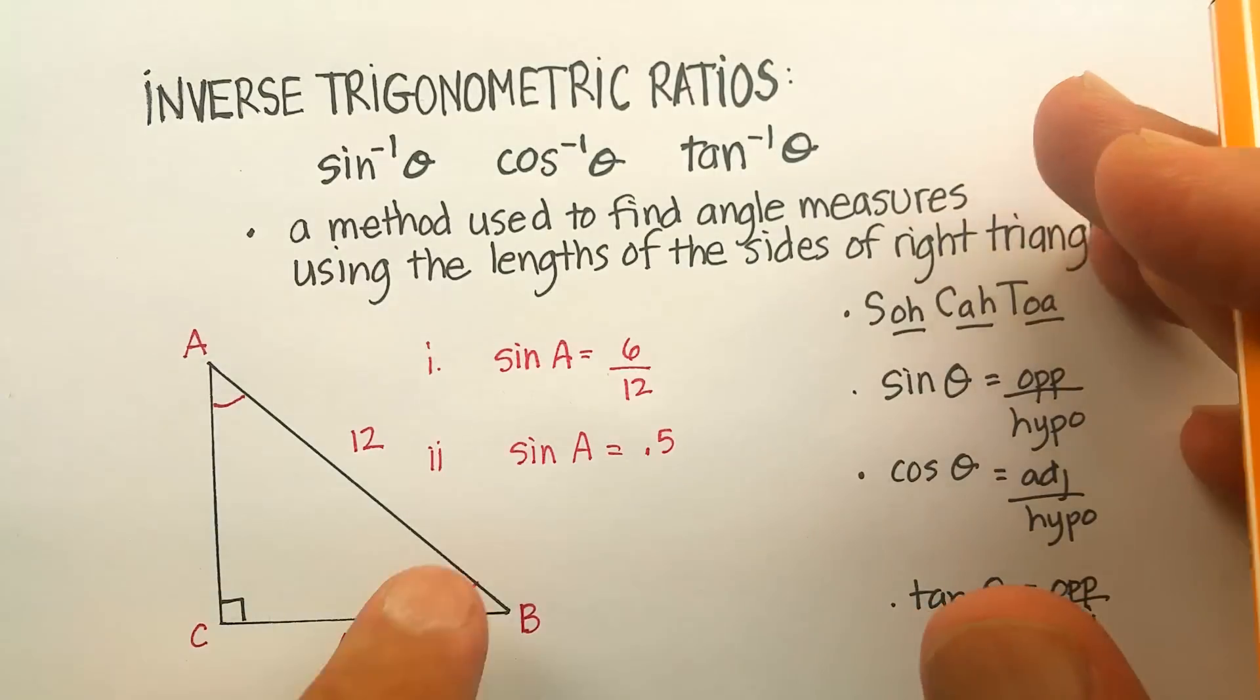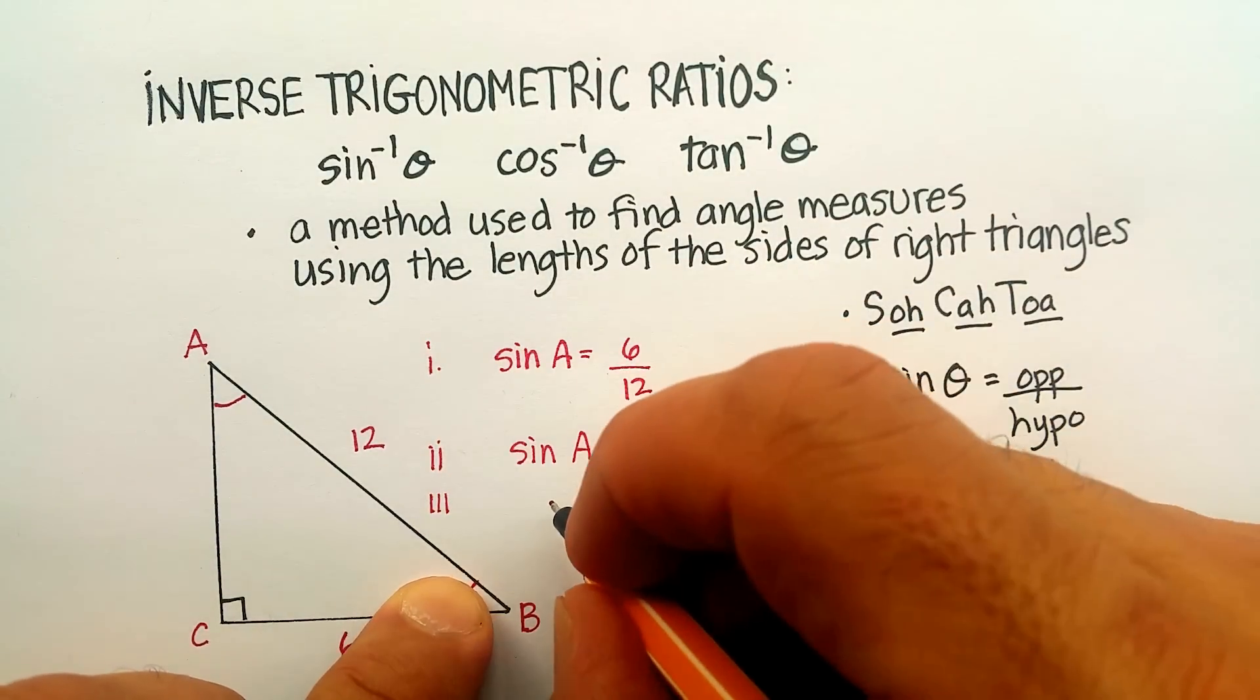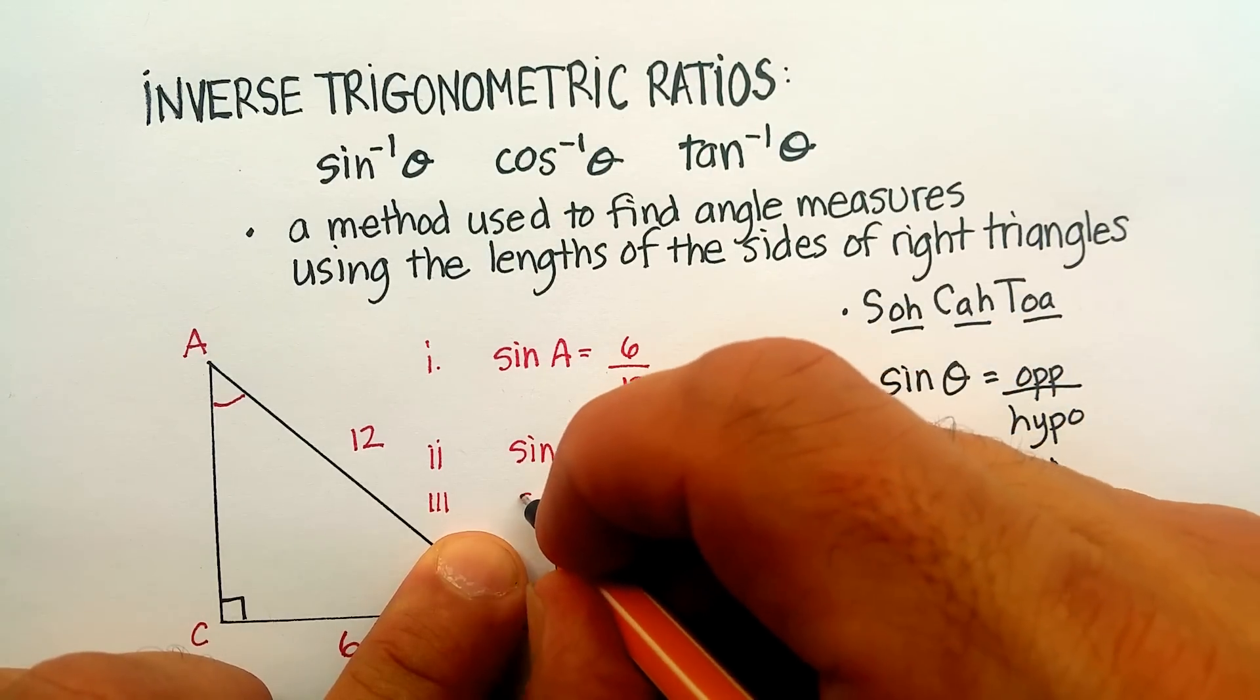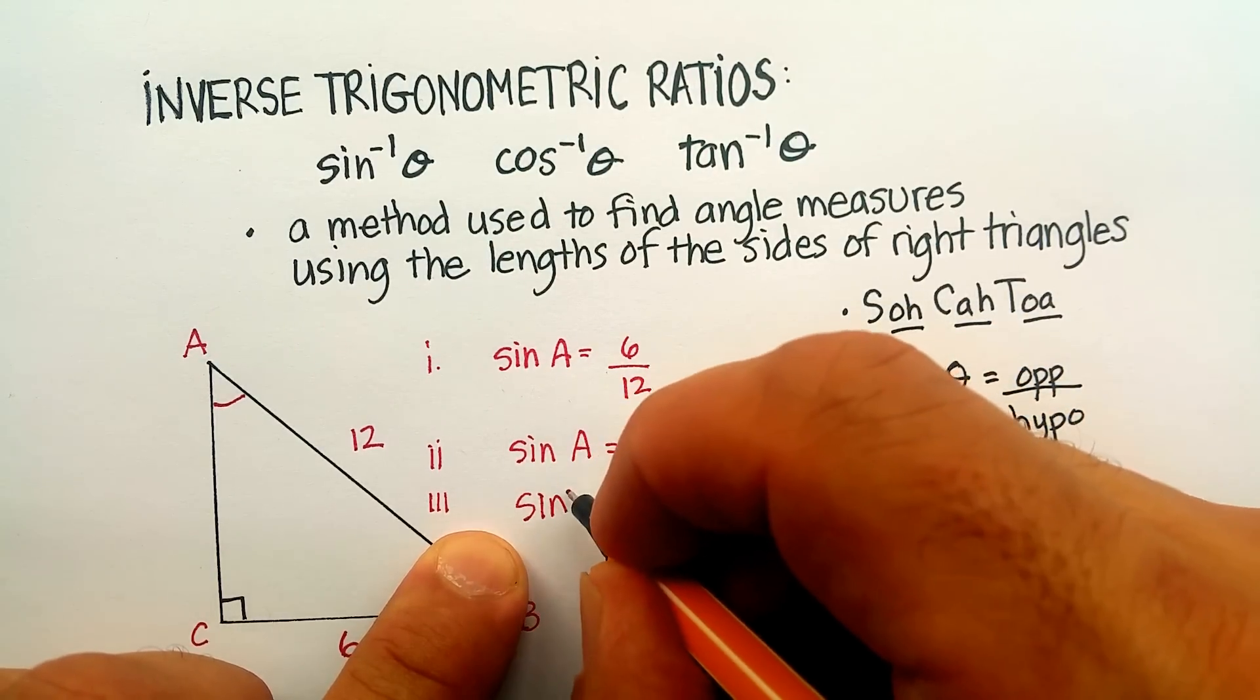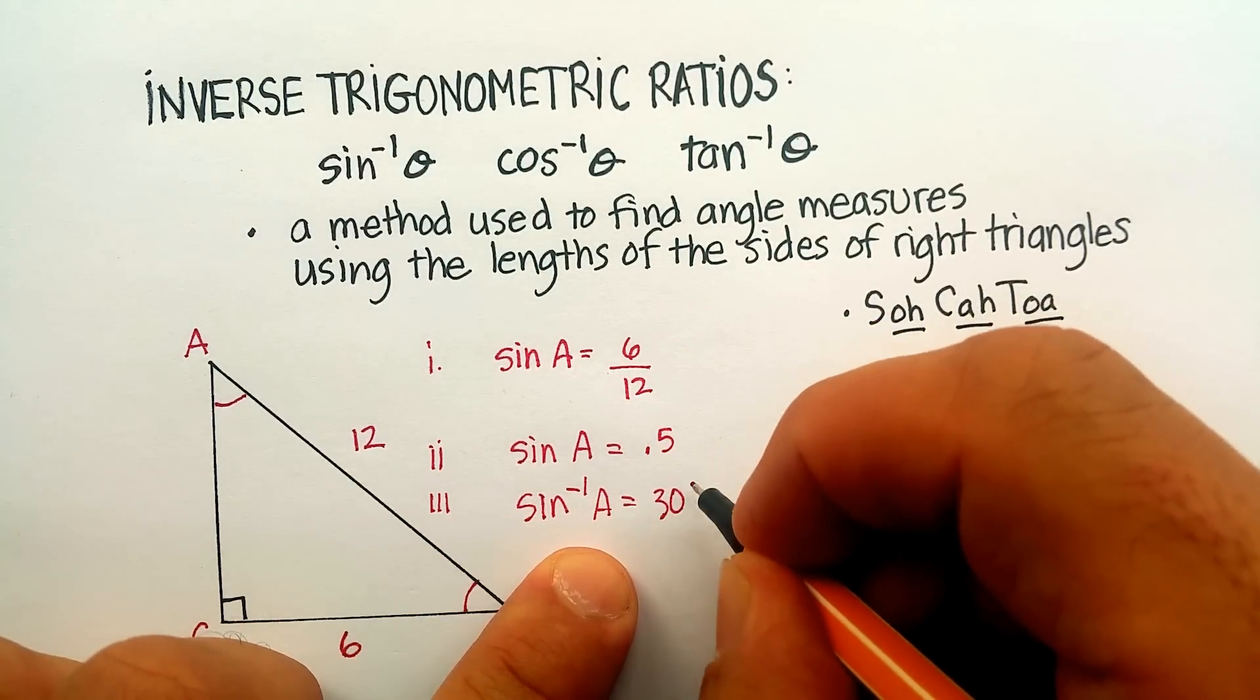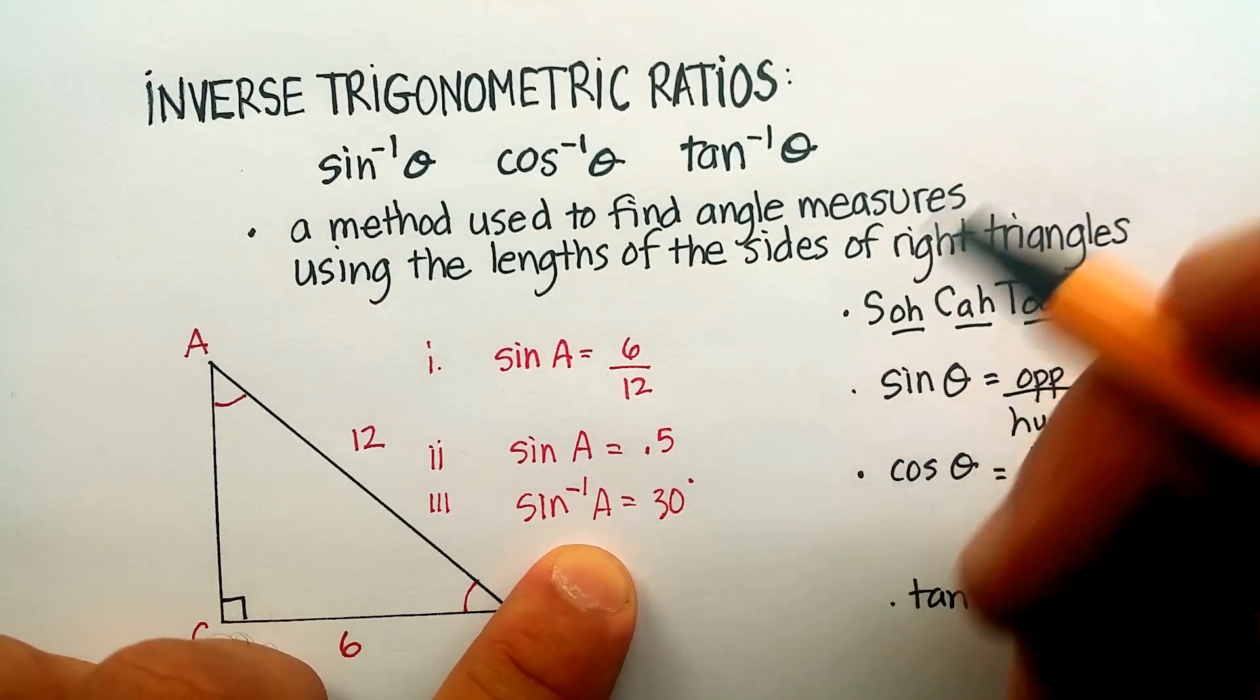So, basically what happens is the inverse sine is equal to 30 degrees. So, I would put sine of A is 30 degrees. And this is simply by pressing that inside here.